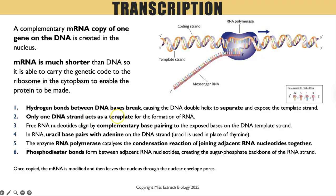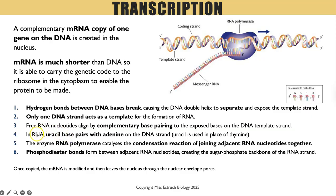Only one DNA strand acts as a template for the formation of mRNA. Within the nucleus there are free RNA nucleotides, and those will align opposite their complementary base pairs on that DNA template strand. There's sometimes an extra mark for noting that complementary base pairing is slightly different in RNA, because RNA has uracil whereas DNA has thymine.